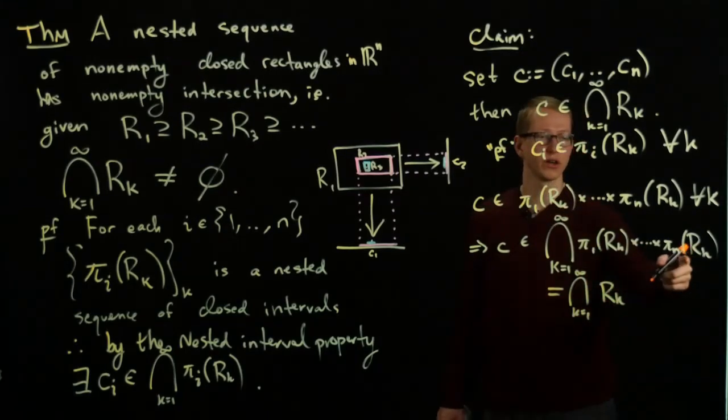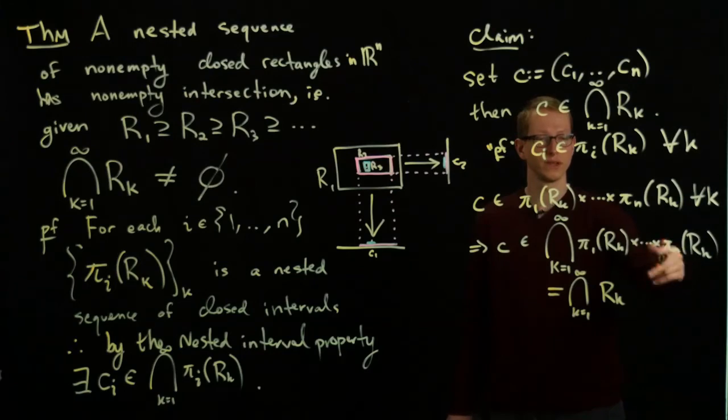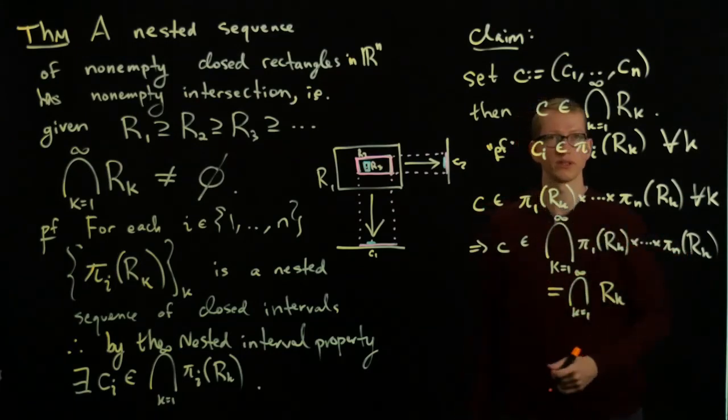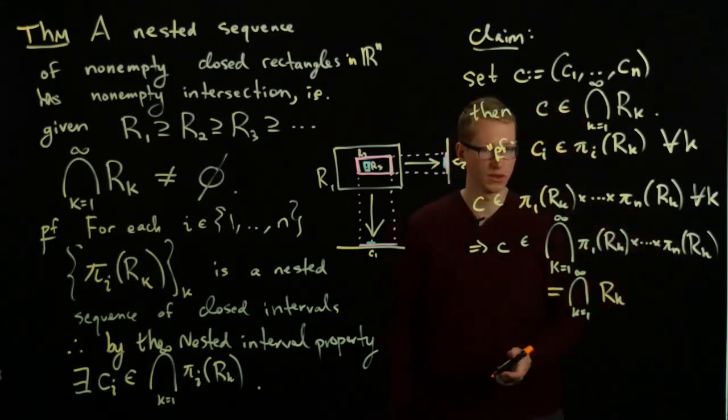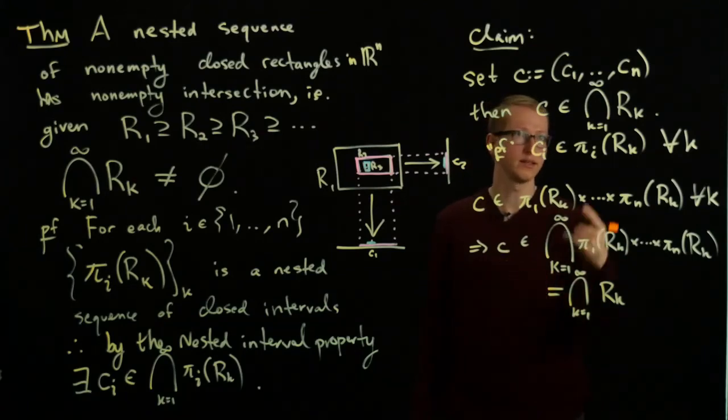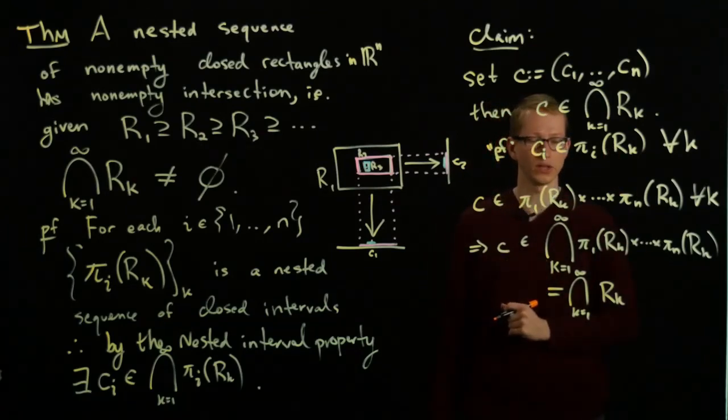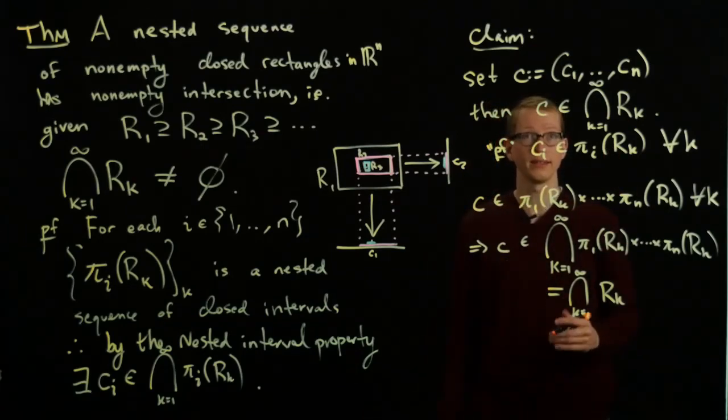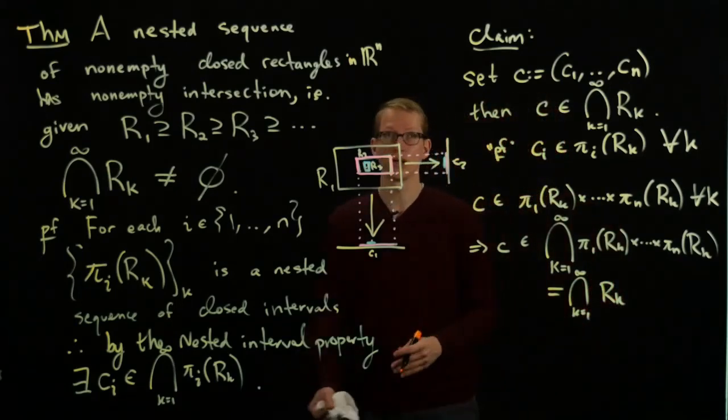Rk is decomposed into its different factors and Rk is precisely the product of all of those factors. This shows that c is exactly in the intersection of all of these Rk's and hence is non-empty, which is what we wanted to show.